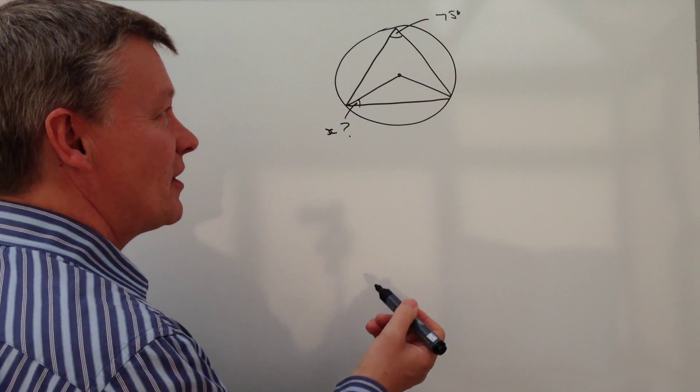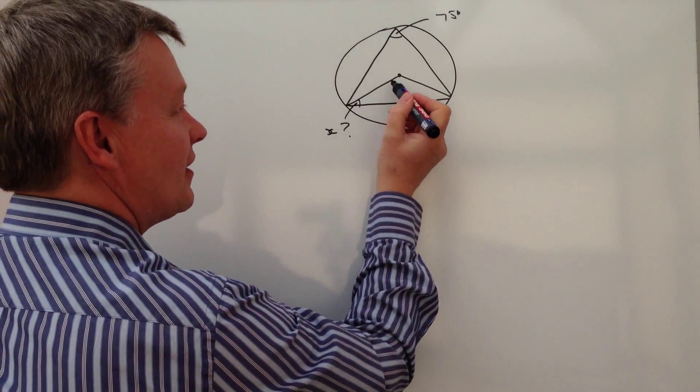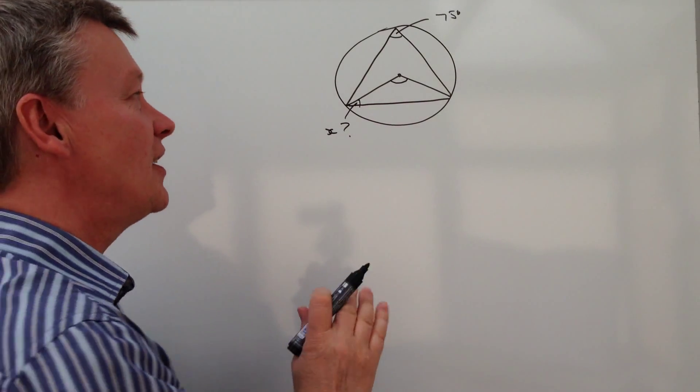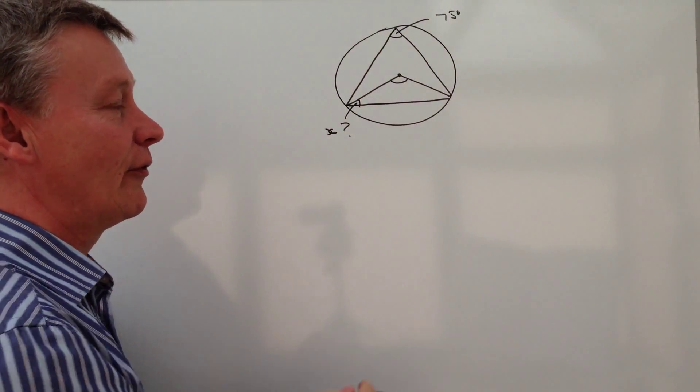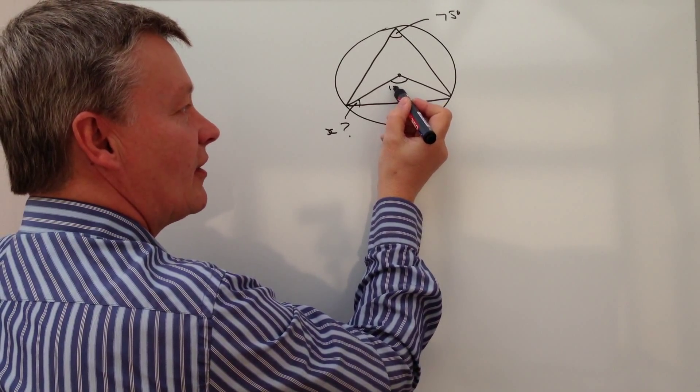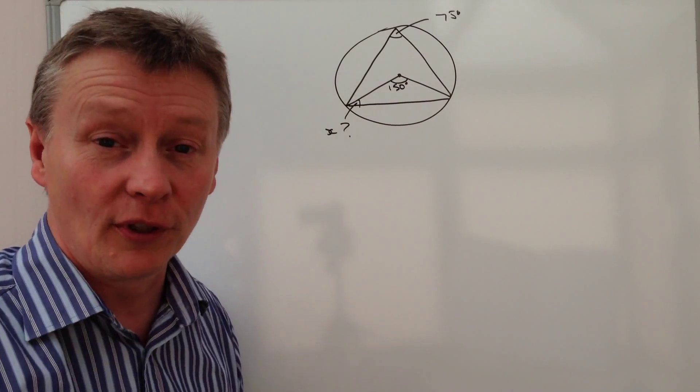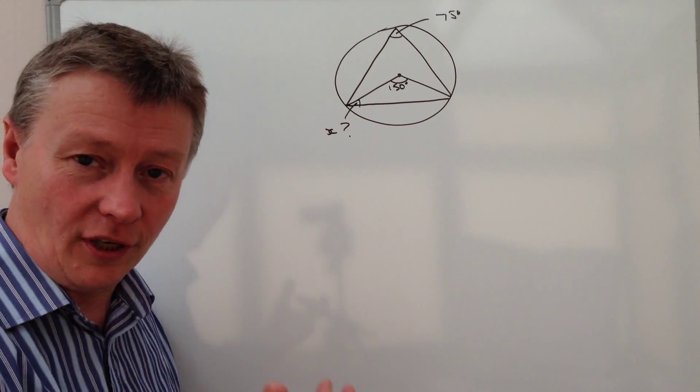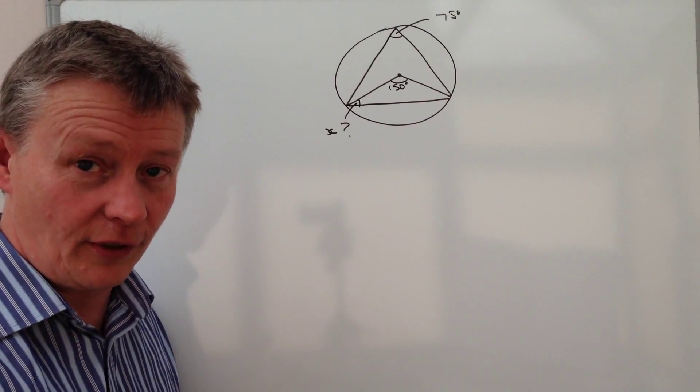So with this particular one, what this says is this angle here, which is in the center of the circle, is double the angle at the circumference. So actually, what we now know is that this angle here is 150 degrees, so it's actually double 75, and that's one of the most common circle theorems that you're going to come across.